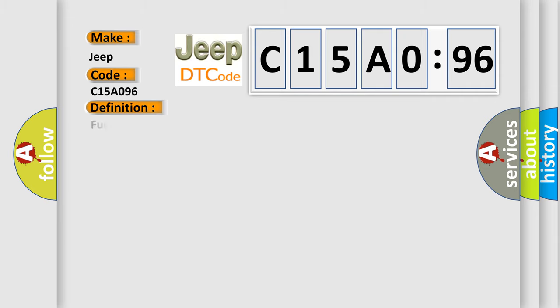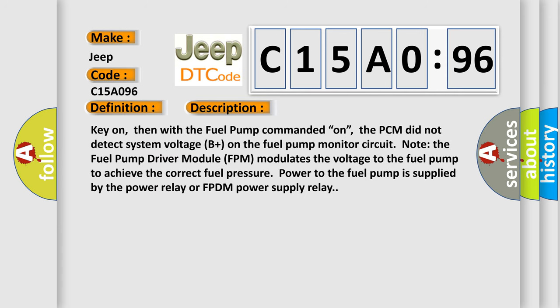The basic definition is fuel pump primary circuit or secondary malfunction. And now this is a short description of this DTC code. Key on, then with the fuel pump commanded on, the PCM did not detect system voltage B plus on the fuel pump monitor circuit. Note the fuel pump driver module FPM modulates the voltage to the fuel pump to achieve the correct fuel pressure. Power to the fuel pump is supplied by the power relay or FPDM power supply relay.